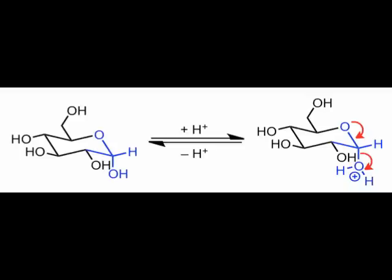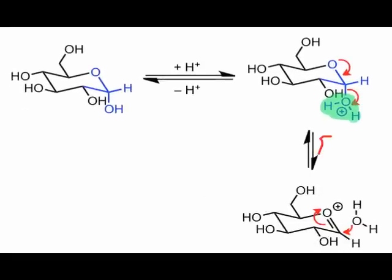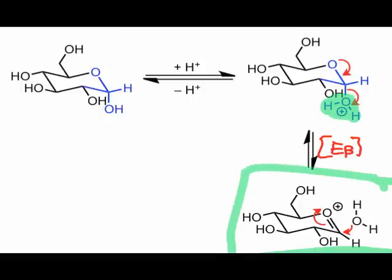But there's another mechanism we can envision, involving protonation of a different oxygen and cleavage of a different C–O bond. If, instead of protonating the oxygen within the ring, we protonate the hemiacetal hydroxyl group, a new mechanistic pathway becomes available. The endocyclic oxygen acts as an electron source here, kicking off water in a beta-elimination elementary step. The resulting cation is an important intermediate called an oxocarbenium ion.